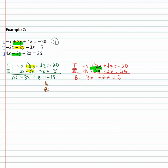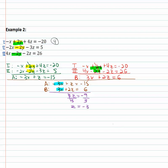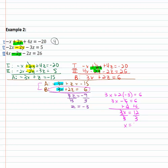We bring A and B together to solve: A is negative three x plus z equals negative fifteen, and B is three x plus two z equals six. We already have opposites in front of x, so adding them directly: three z equals negative nine, and dividing by three, z equals negative three. To find x, we use equation B with z equals negative three: three x plus two times negative three equals six, so three x minus six equals six. Adding six to both sides and dividing by three, x equals four.